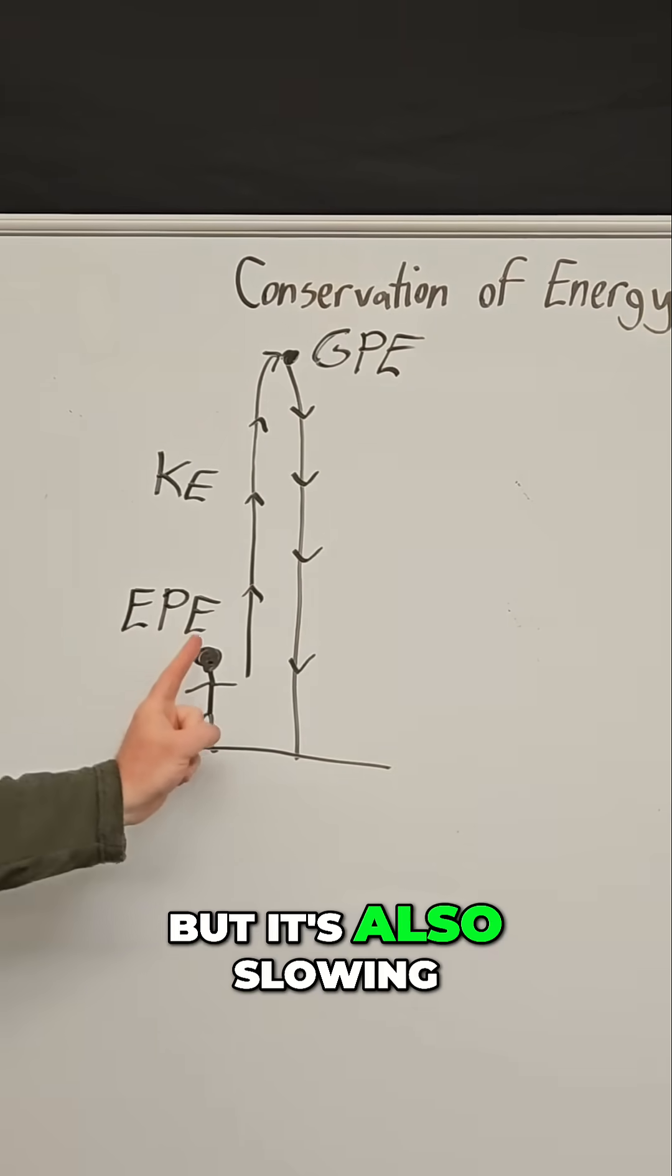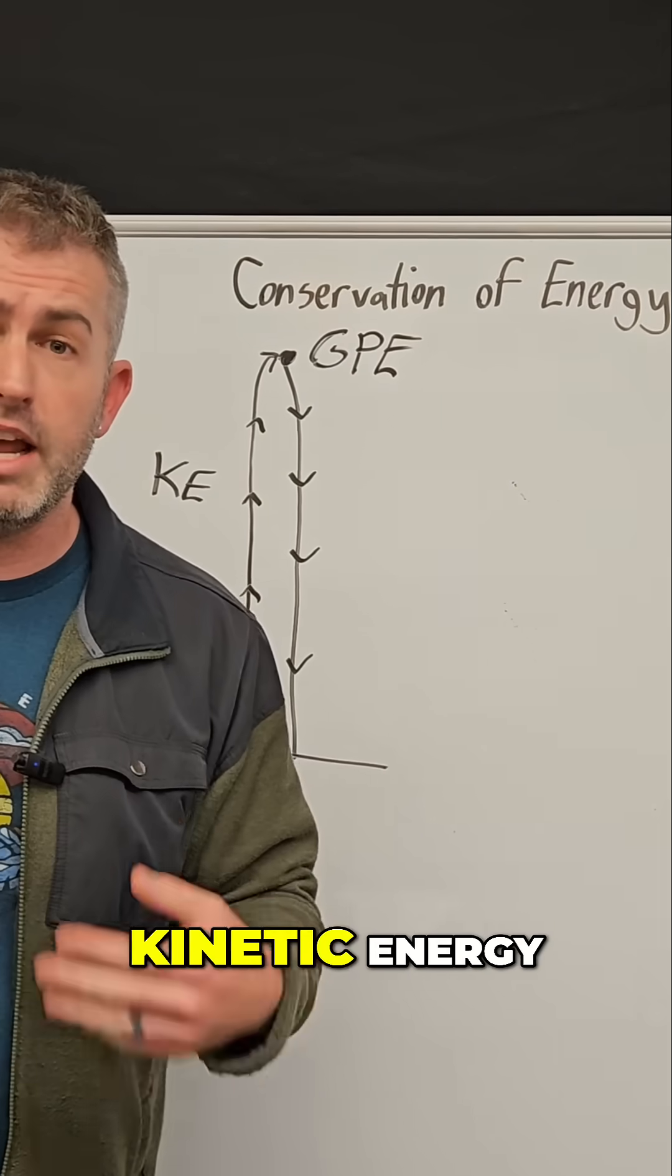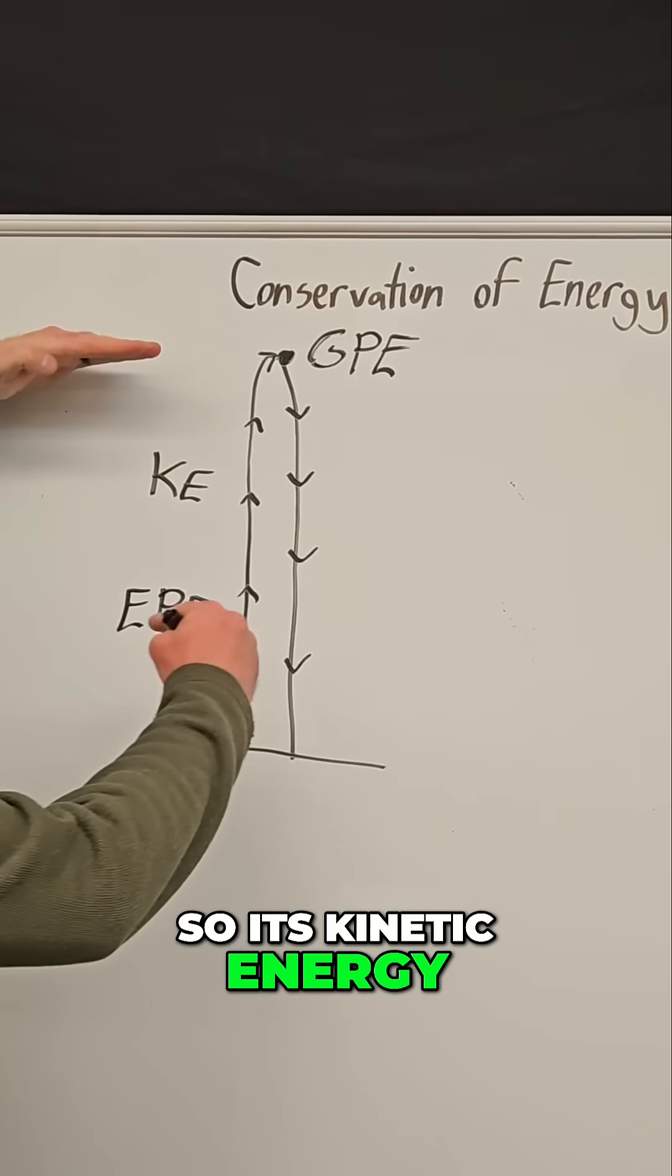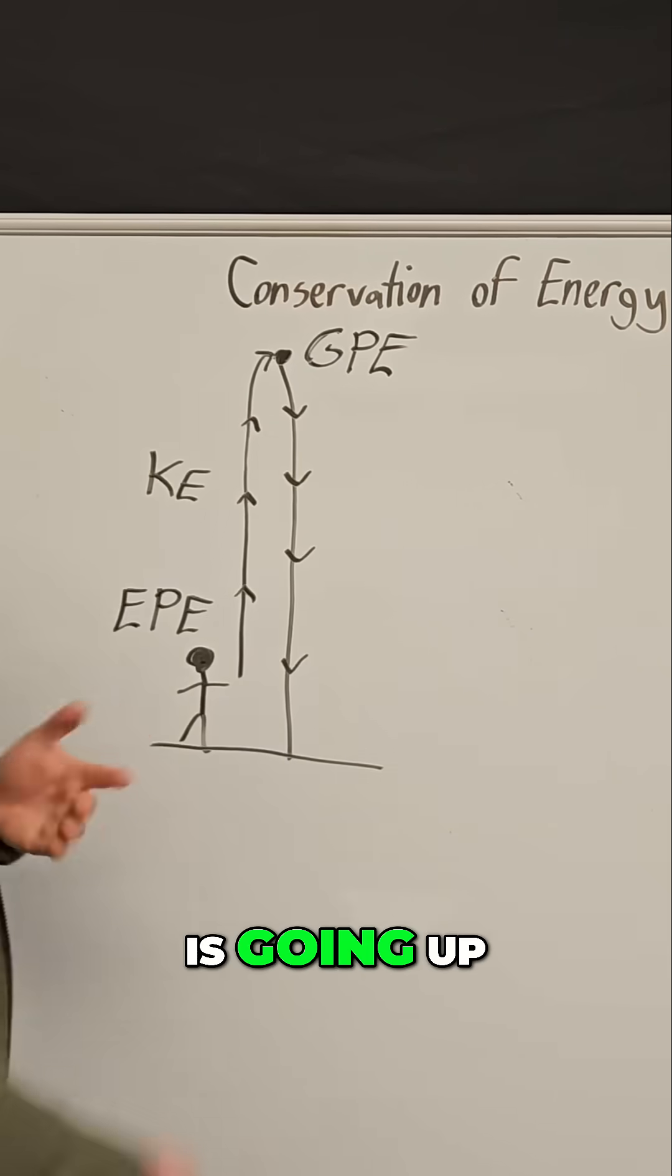But it's also slowing down on the way up, which means it's losing kinetic energy. So its kinetic energy is going down, but its gravitational potential is going up.